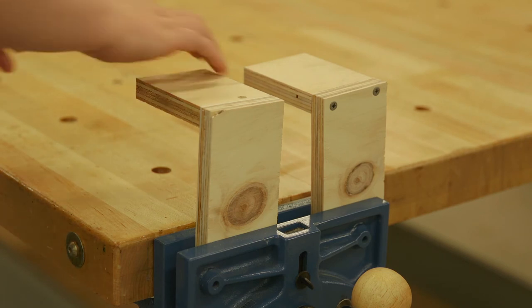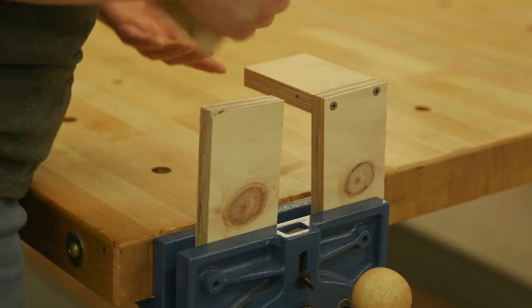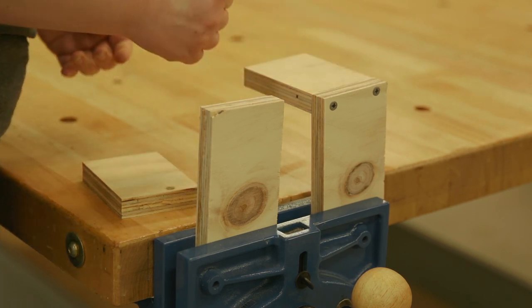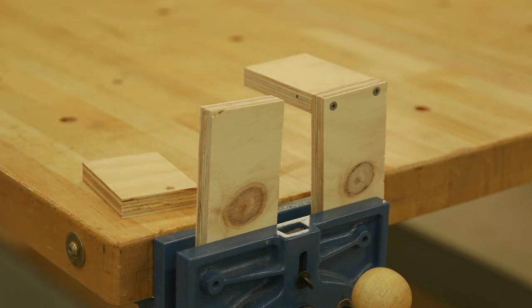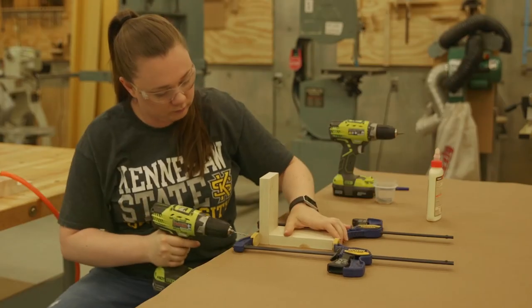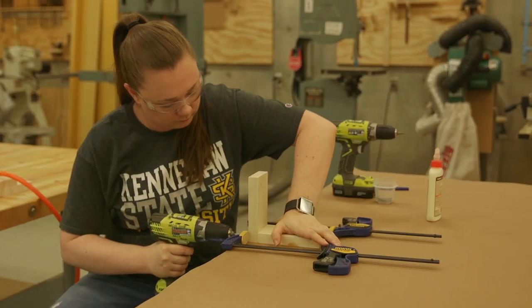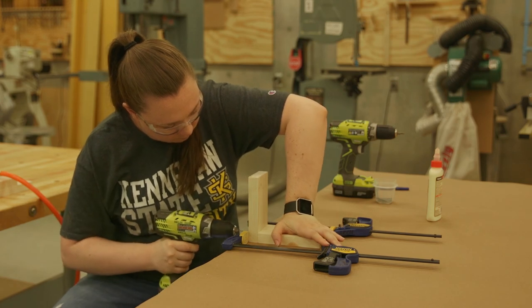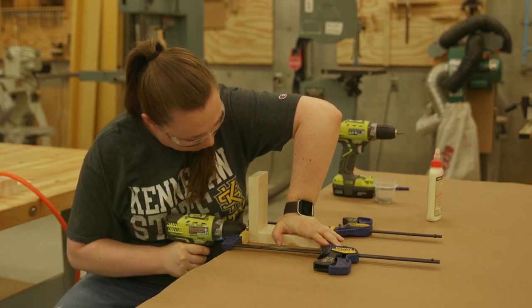If the joint is to be reinforced with brads, nails, or screws, it is important to hold the parts in the desired position when the reinforcing fasteners are installed. If reinforcing fasteners will be installed, drill pilot holes slightly smaller than the hardware to avoid splitting the material.